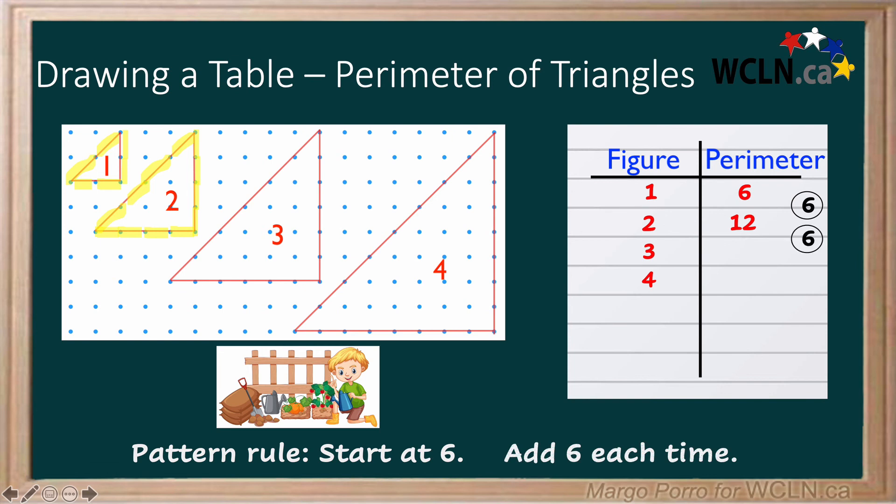We add six to twelve for eighteen. We add another six for twenty-four. We can even extend beyond the four triangles that we have pictures of by applying this rule. If there were a fifth triangle that's even larger, we could add six and we would find out it has a perimeter of thirty.